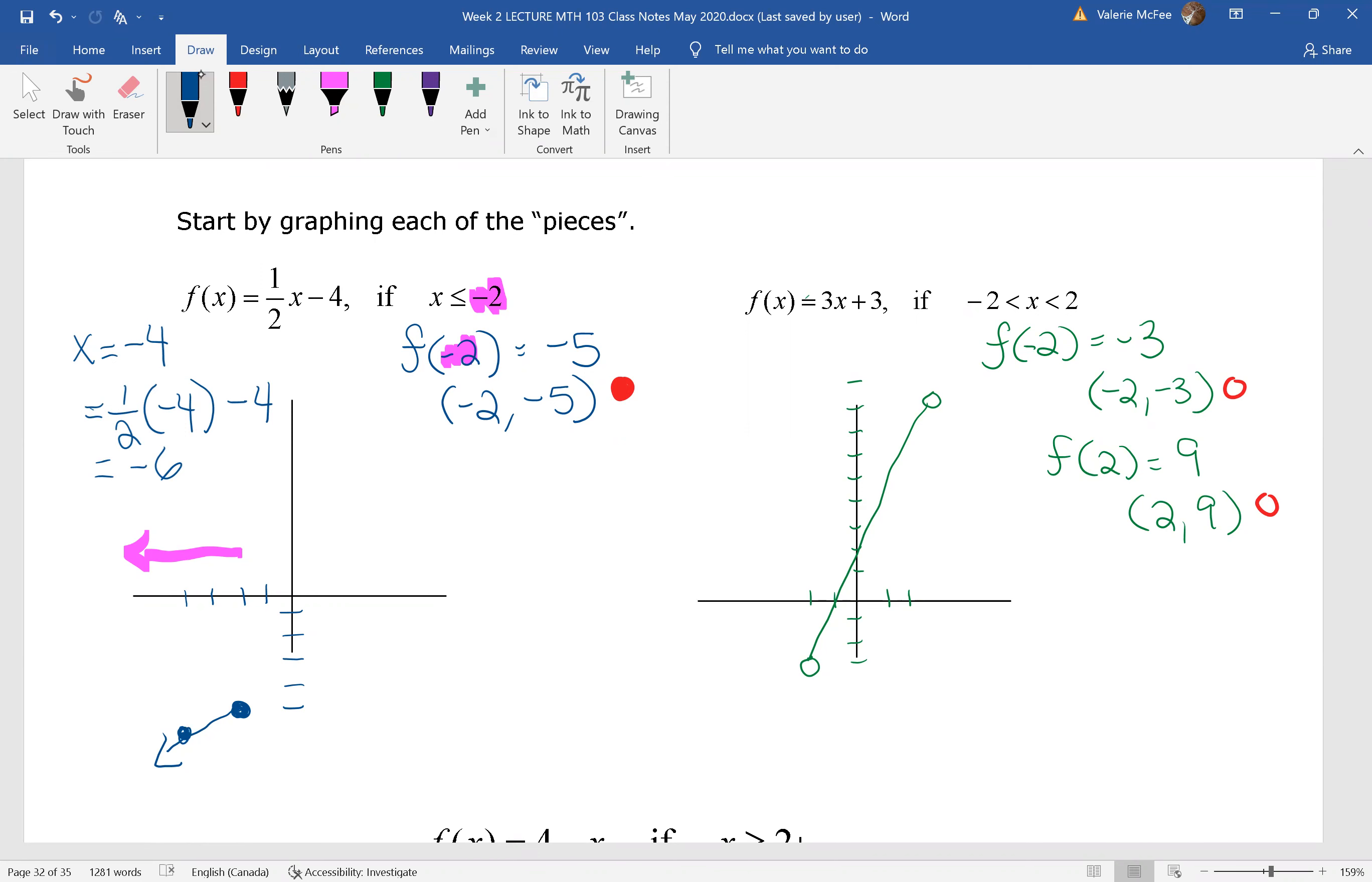In the next one, you have two end pieces. You found the f of negative two, which was negative three with an open circle there. You found the f of two, which equaled nine. This is also a linear equation, so we know it's just a straight line connecting those two end points.